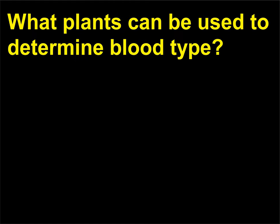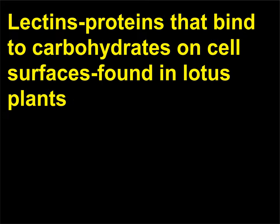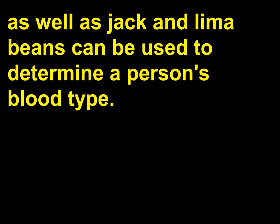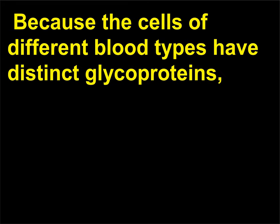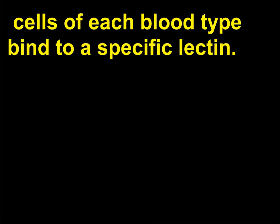What plants can be used to determine blood type? Lectins bind to glycoproteins present on the plasma membrane of red blood cells. Because the cells of different blood types have distinct glycoproteins, cells of each blood type bind to a specific lectin.